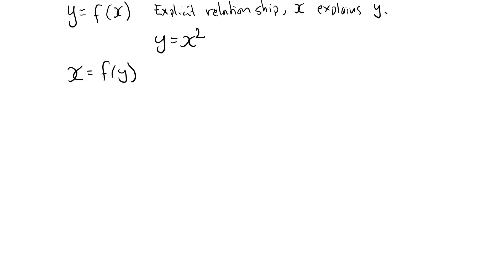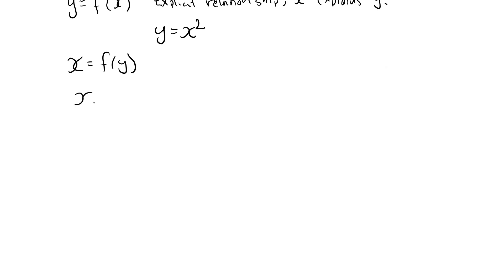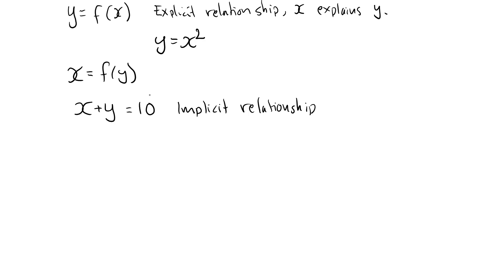So here is a simple example. x plus y is equal to 10. This is an implicit relationship since x and y are no longer free to take any arbitrary value. If x takes the value 6, y must take the value 4 and so on. In some cases, but not all cases,